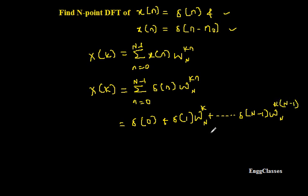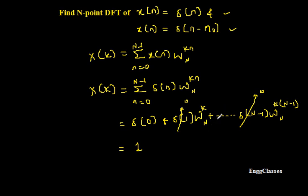This is the expression. To simplify, I use the concept of the unit impulse signal. The impulse signal exists only at n=0 and is 0 everywhere else. So δ(0) = 1, δ(1) = 0, and δ(N-1) = 0 as well. All other terms turn out to be 0.